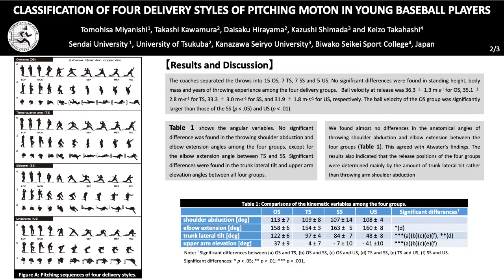We videotaped 34 throws. Koji visually separated them into 4 groups: 15 overarm, 7 three-quarter, 7 sidearm, and 5 underarm. Table 1 shows significant differences between all 4 groups in the trunk lateral tilt and upper arm elevation angles relative to the global reference frame.